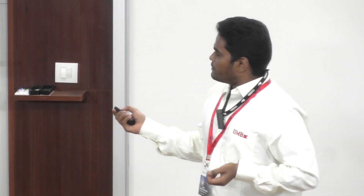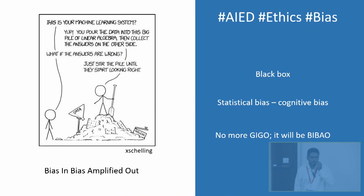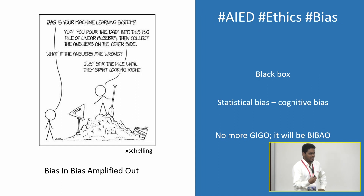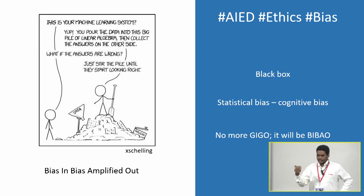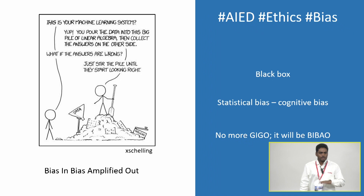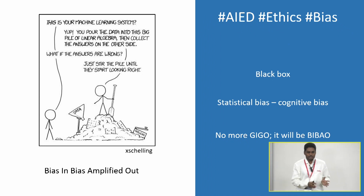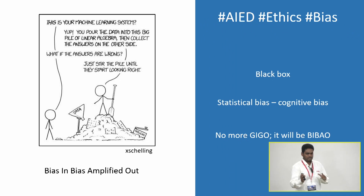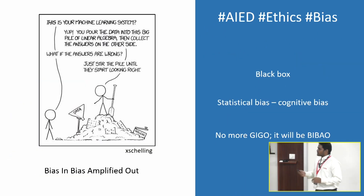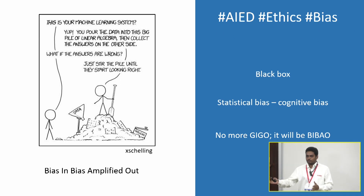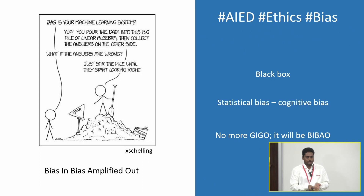For example, if I develop a career recommendation algorithm and a male candidate is recommended 'doctor' while a female candidate is recommended 'nurse,' that's fundamentally wrong. But imagine the data feeding into the algorithm — it matches the biases present in our social and cultural networks. It's not a linear mapping; the bias in the input is amplified in the output beyond control.